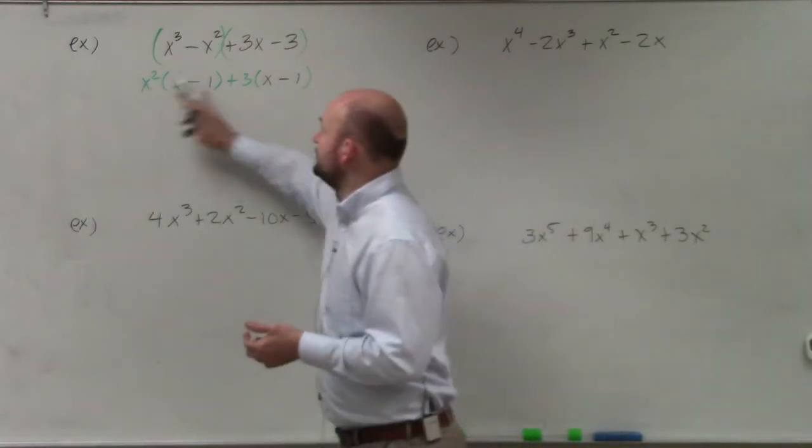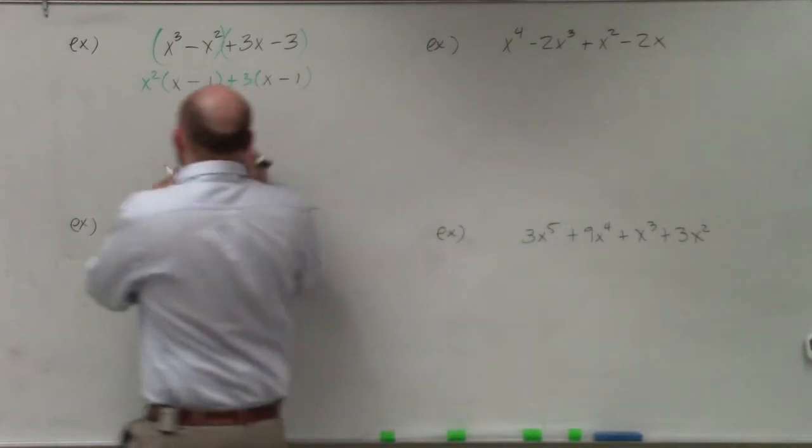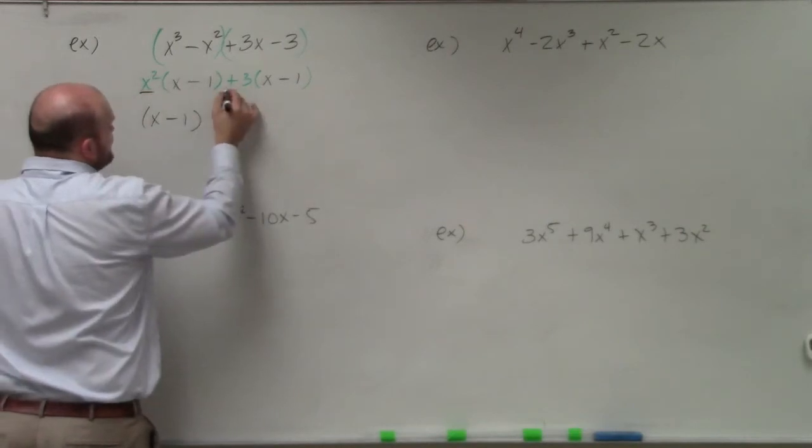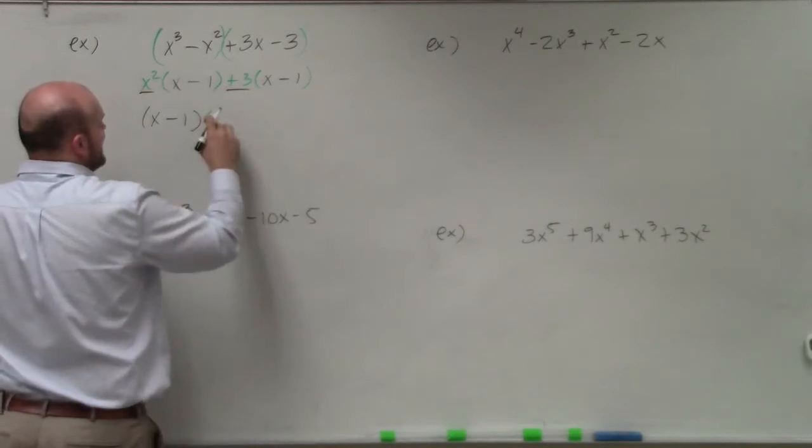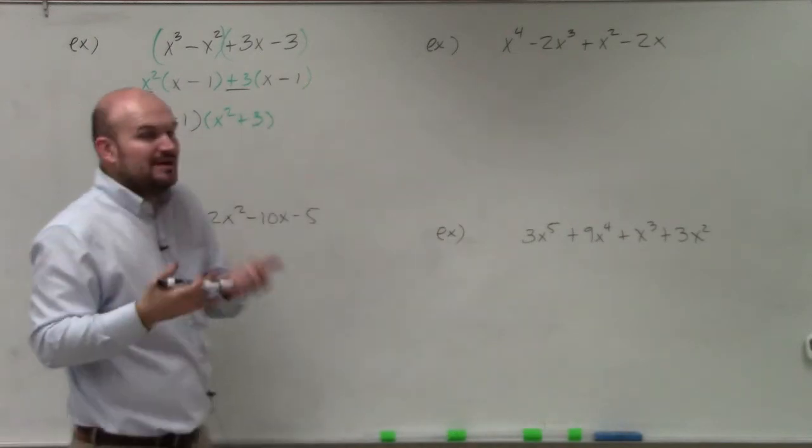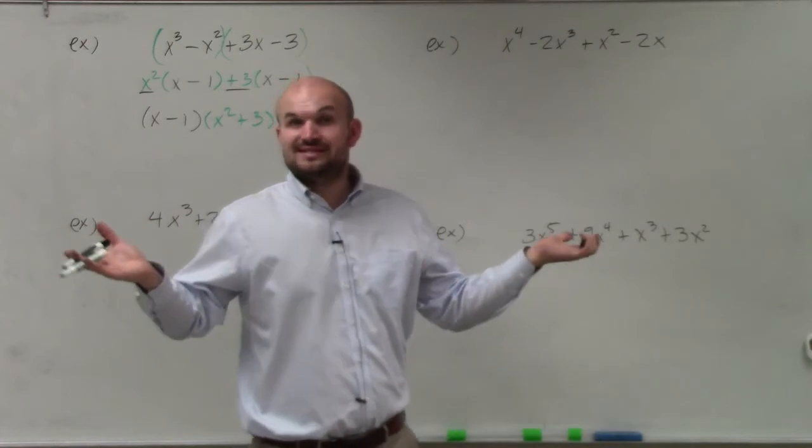Well, that's common between these two terms which are separated by addition. So I can factor that out again. And by factoring that out, I get x minus 1, and what I'm left over with is an x² plus 3. And that's going to be my other factor. And now I have rewritten my polynomial as a product of two factors and therefore you can say it's factored.